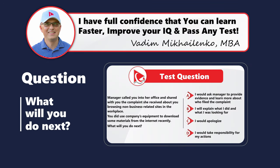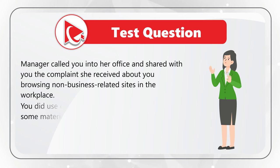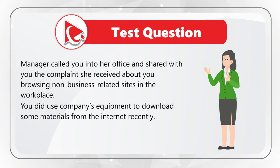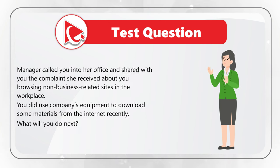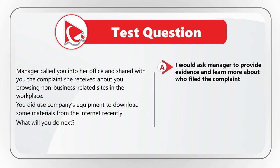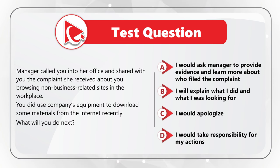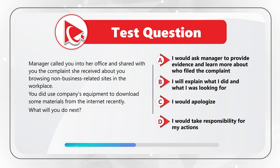Here's an interesting question you frequently see on the test. Your manager called you into her office and shared a complaint she received about you browsing non-business related sites in the workplace. You did use the company's equipment to download some materials from the internet recently. What will you do next? Select all that apply. Choice A: ask manager to provide evidence and learn more about who filed the complaint. Choice B: explain what I did and what I was looking for. Choice C: apologize. Choice D: take responsibility for my actions.